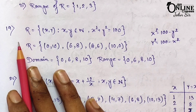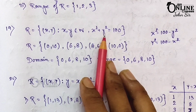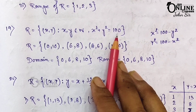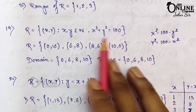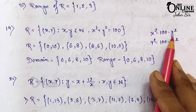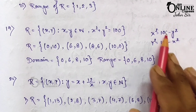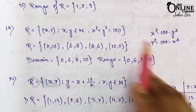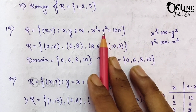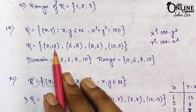Now sum number 19. If R = {(x,y)} such that x,y belongs to whole numbers and x² + y² = 100, find the domain and range of R, and write R in roster form. Here x² = 100 − y², or y² = 100 − x². If x = 0, then y² = 100 and y = 10, giving the ordered pair (0, 10).